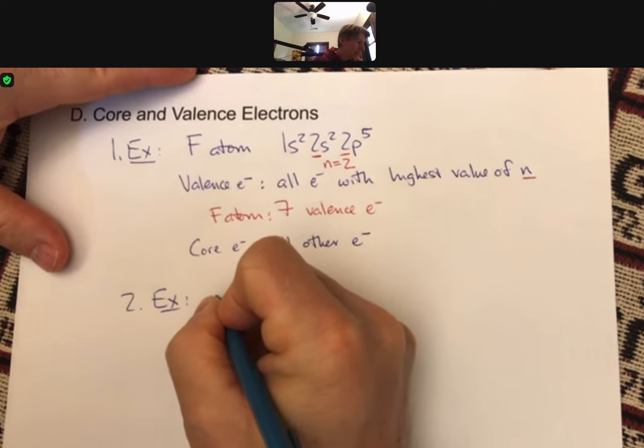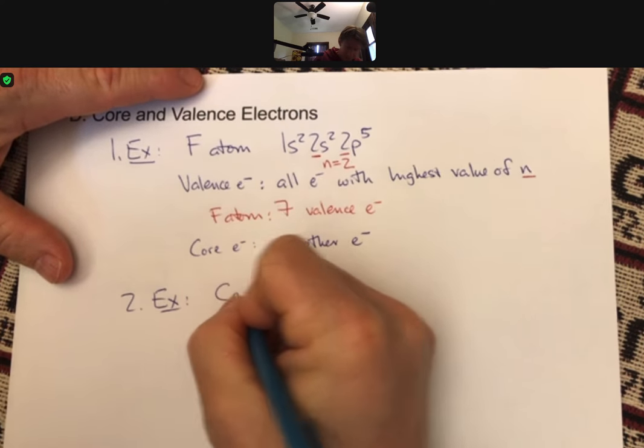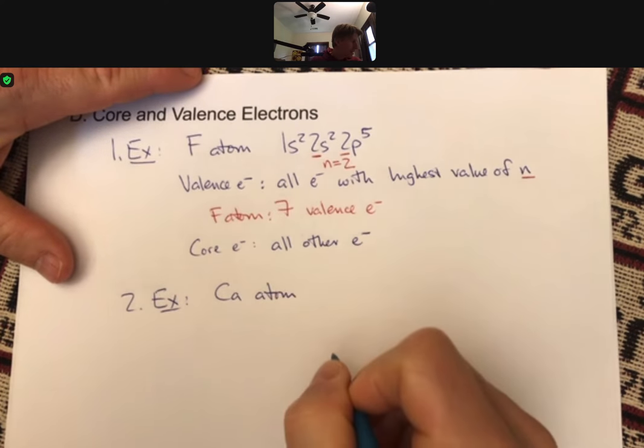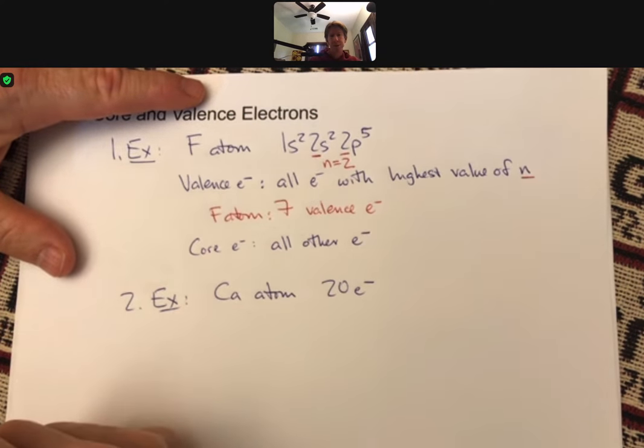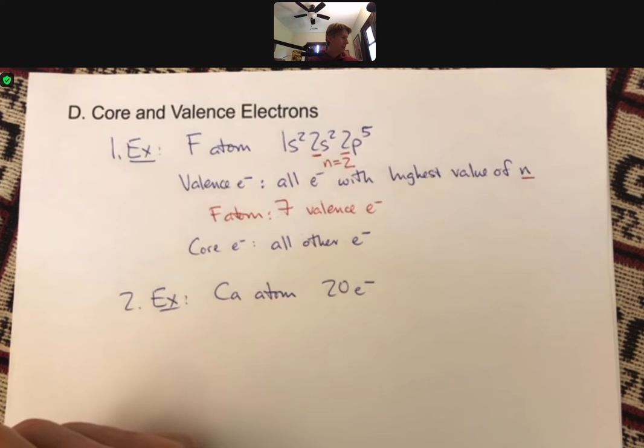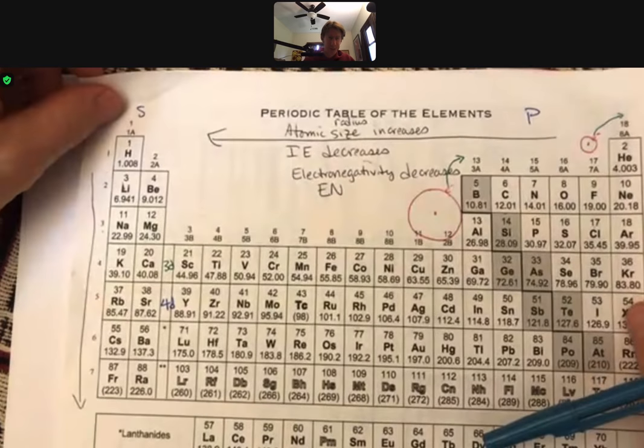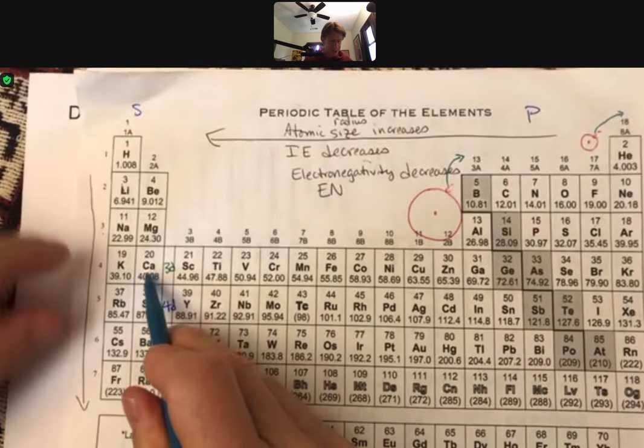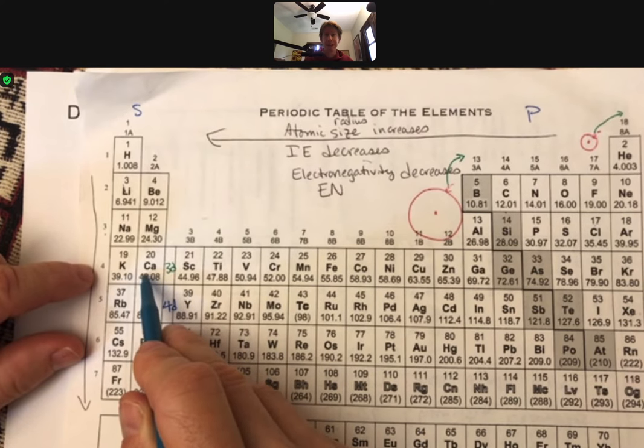Let's do a calcium atom. A calcium atom has 20 electrons. We can do the electron configuration. I've got my periodic table right here. Here's calcium. It's going to be in the 4s area, so we know that that's where the last electrons are going to be.